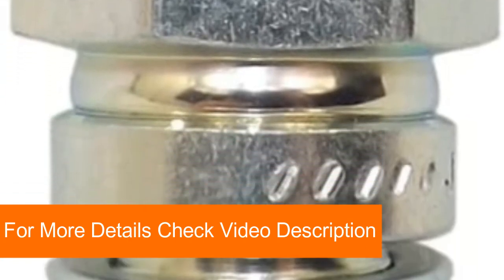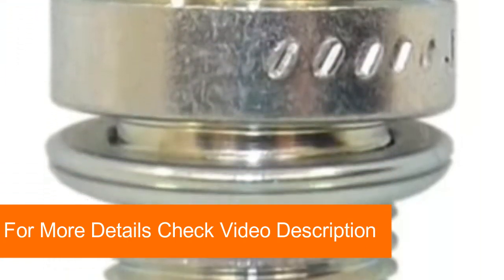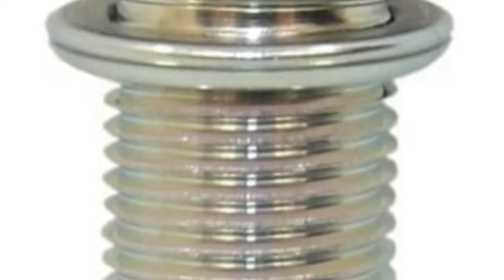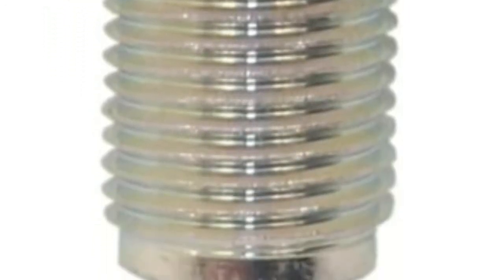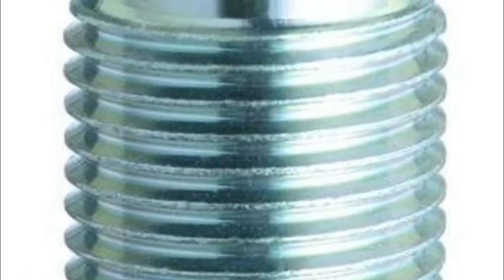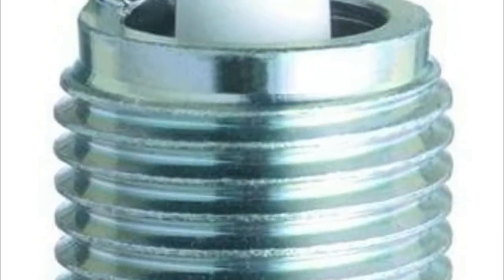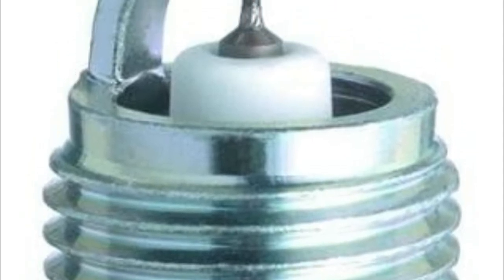and a consistently stable spark, and the tapered ground electrode minimizes electrical catching effect. Longer insulator nose prevents fouling, the corrugated ribs on insulator prevents flashover, and the triple gasket seal eliminates combustion gas leakage.